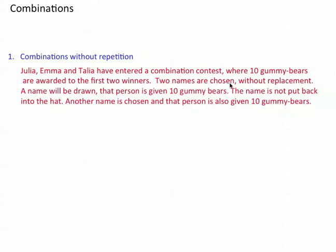Two names are chosen without replacement. So you're taking a name out, you read it, and you throw it away — that name is not in the list to be chosen the second time. A name will be drawn, that person is given ten gummy bears. The name is not put back into the hat. Another name is chosen and that person is also given ten gummy bears.